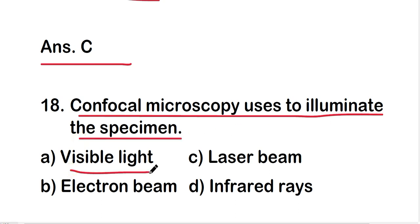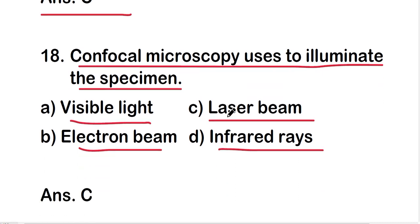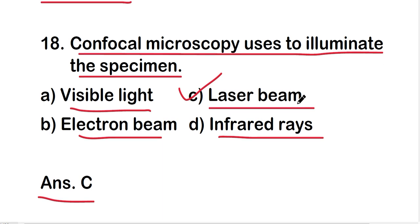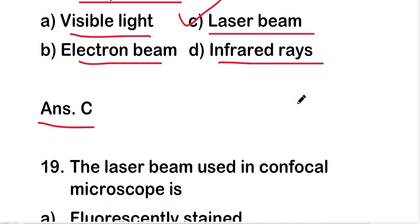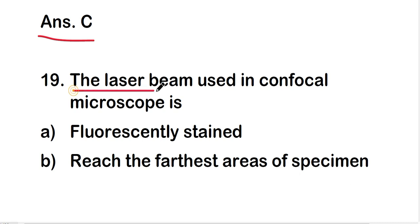Confocal microscope uses which to illuminate the specimen: visible light, electron beam, laser beam, or infrared rays? The right answer is option C — laser beam. The confocal microscope uses a laser beam to illuminate the specimen.